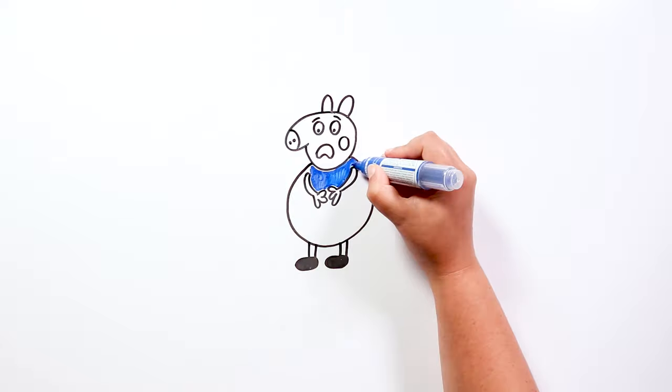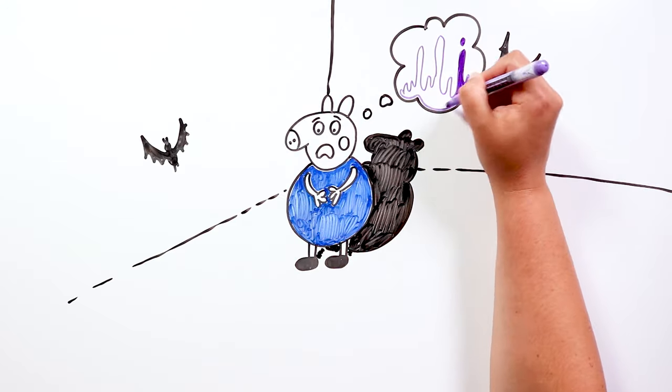After this scene, George was cornered in a dark corner, very scared. His sister had completely lost her mind.